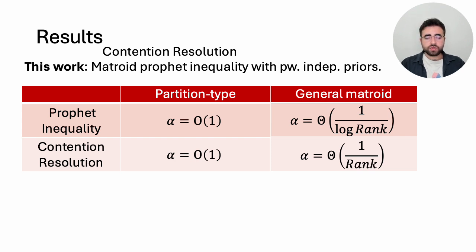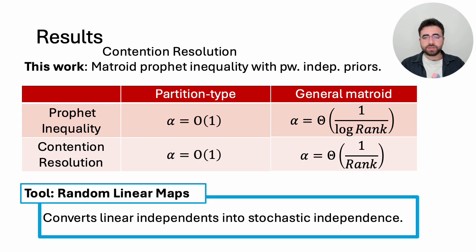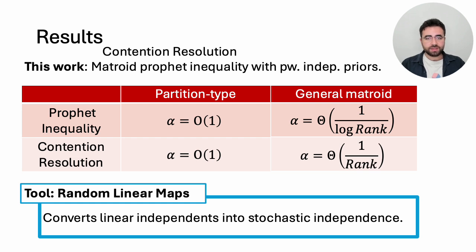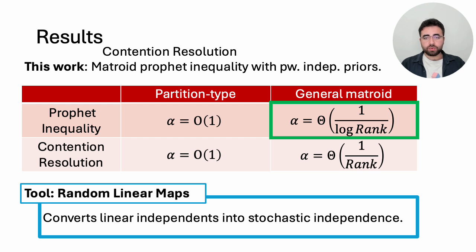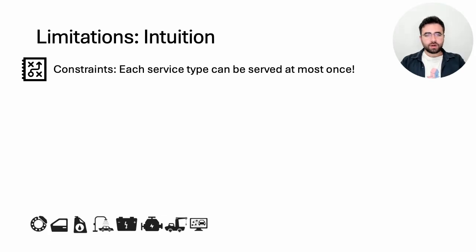To construct these hard pairwise independent examples, we developed a tool showing that random linear functions transform linear independence to stochastic independence. This serves as a critical subroutine of our constructions for both prophet inequality and contention resolution. Some special cases of this tool were previously discovered in derandomization theory, but we have not seen a statement at this level of generality. As we have limited time, we will focus on pairwise independent prophet inequality with general matroid constraints and the construction of the hard example.